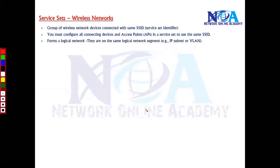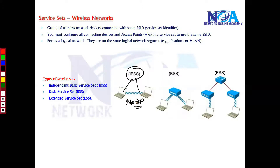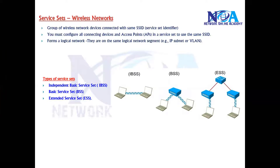There are mainly three types of service sets — three types of logical grouping networks. You can connect in the form of an Independent Service Set, a Basic Service Set, or an Extended Service Set. If you are connecting devices without any access point, that kind of network is called an Independent Service Set, also known as ad-hoc mode, P2P mode, or computer-to-computer network.